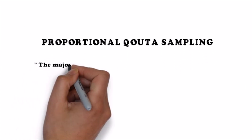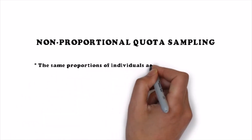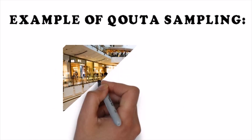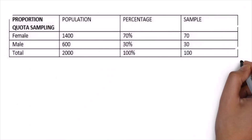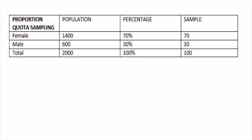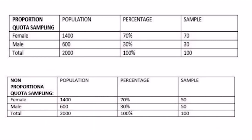In proportional quota sampling, the major characteristics of the population are represented in proportion in the sample. In non-proportional quota sampling, the same fixed portion of individuals is taken regardless of their proportion in the entire population. For example, in a shopping mall, if it is already known that 70% of visitors are female, then taking 70% females and 30% males in the sample would be proportional sampling. If we instead take 40-60 or 50-50 male and female, that would be disproportional sampling.